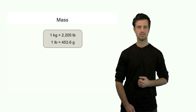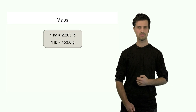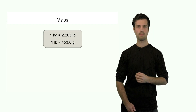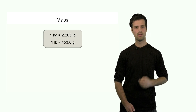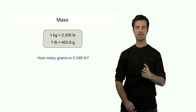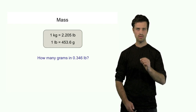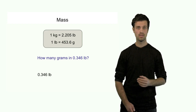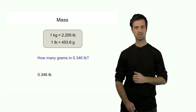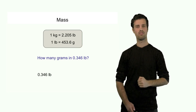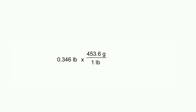Let's turn to mass and look at useful relations. The first line relates kilograms to pounds, and the second line relates pounds to grams — both very useful for mass conversions. For instance, how many grams go in 0.346 pounds? The answer is 0.346 pounds times a unit factor with grams on top and pounds at the bottom, so pounds strike out and the result is expressed in grams. The answer is 157 grams.